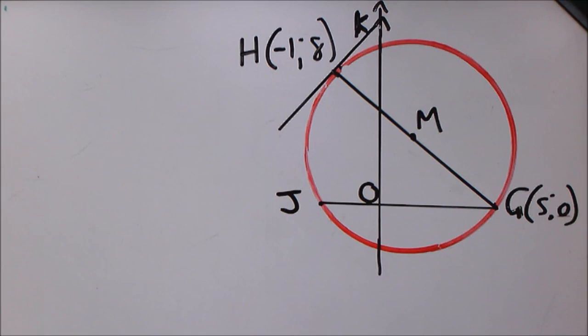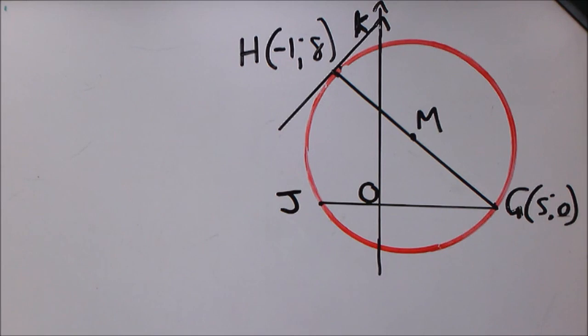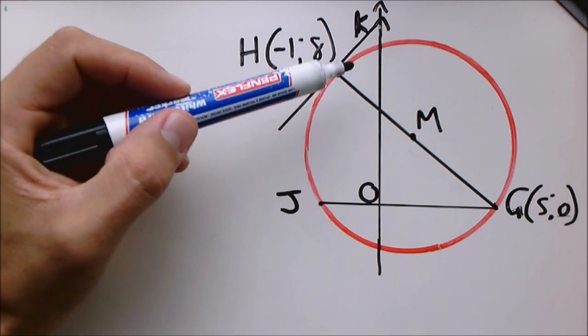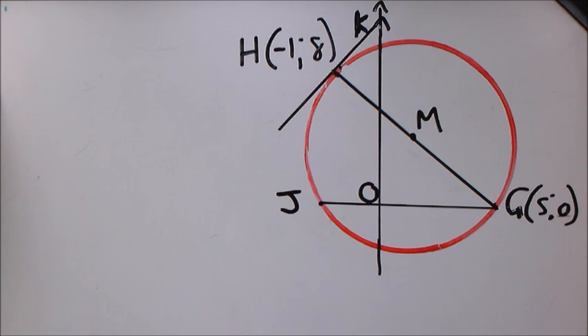That's the information given. The very first question: write down the coordinates of M. Now M is very easy to calculate by using the midpoint formula to get the center. So we are going to just do that calculation.